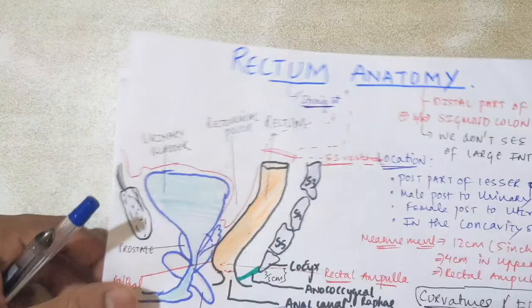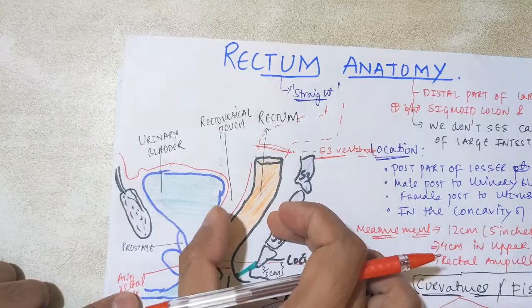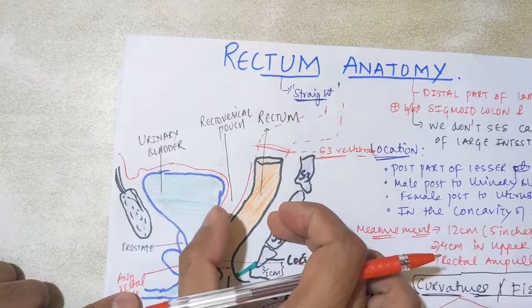This concludes the first video on the basic anatomy of the rectum. In the next video we'll be discussing the detailed relations — what structures are present on the posterior and anterior sides at the upper, middle, and lower levels — as well as the internal structures of the rectum. If you liked the video, please share and subscribe to the channel.